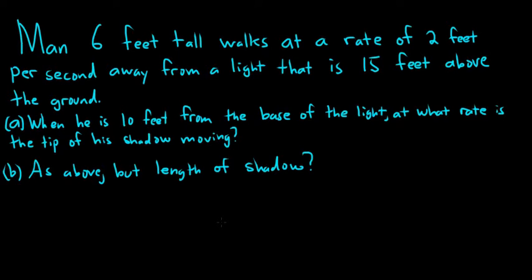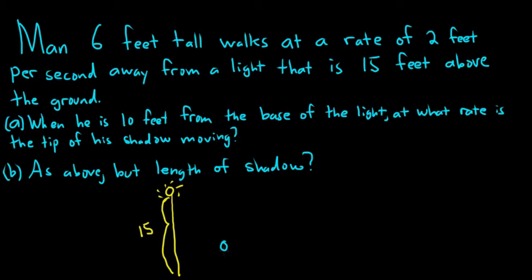Let's set up the problem. The man is 6 feet tall and walking away from a light at 2 feet per second. The light is 15 feet above the ground. Drawing a picture: here's the light — it looks like a sun — 15 feet above the ground. Over here we draw the man, who is 6 feet tall. We draw a triangle from the top of the light to the top of the man's head, and here we have the tip of his shadow. This dot is the tip of the man's shadow.